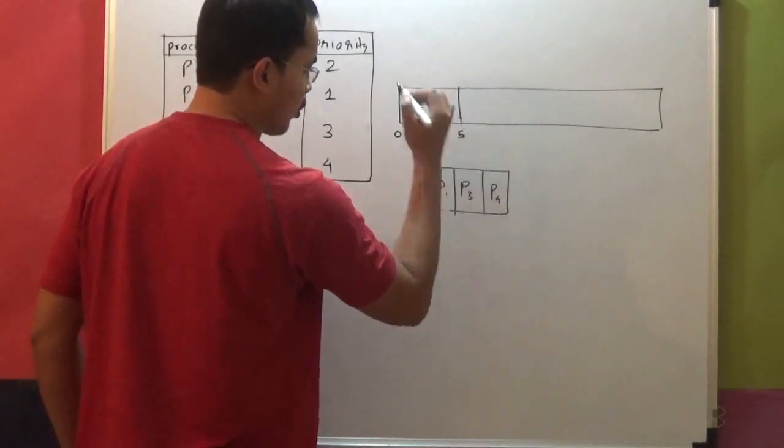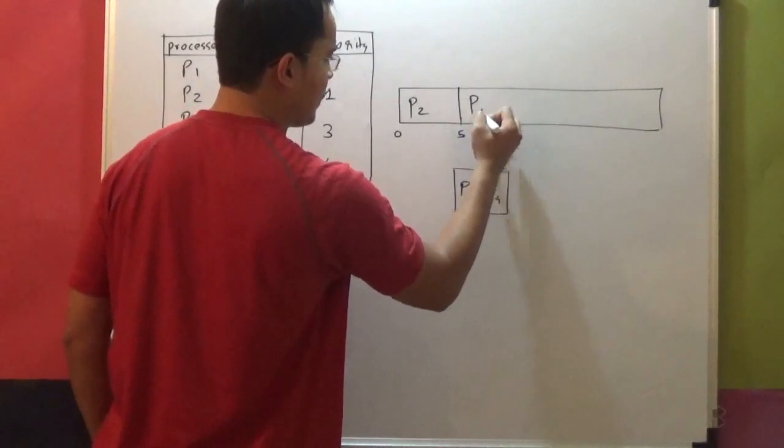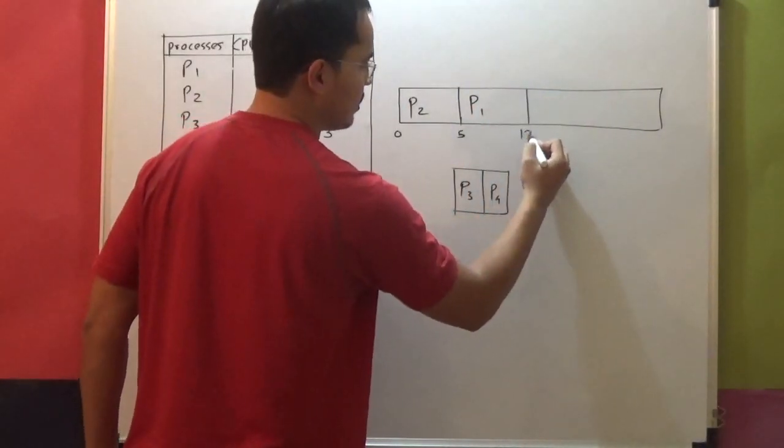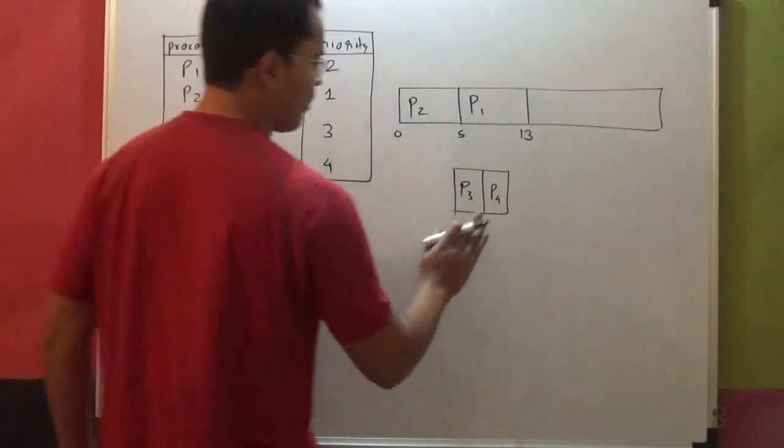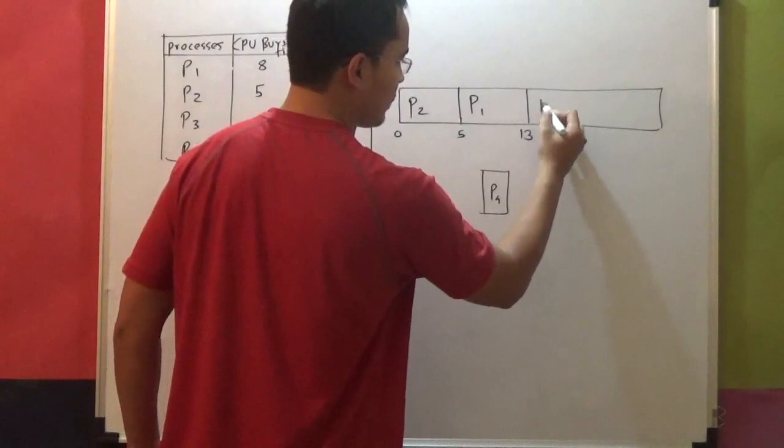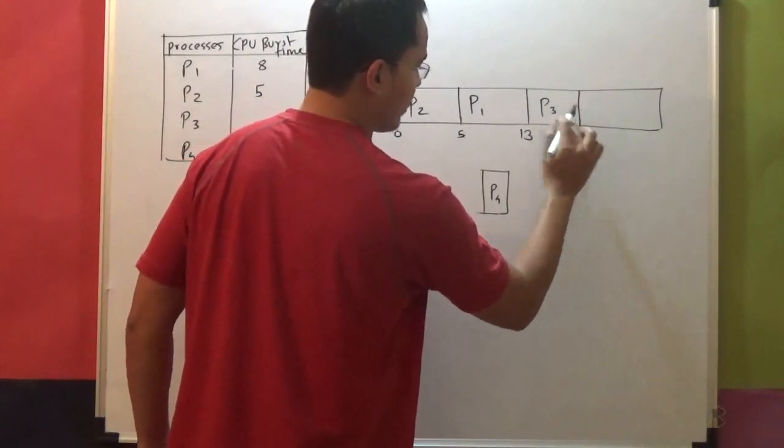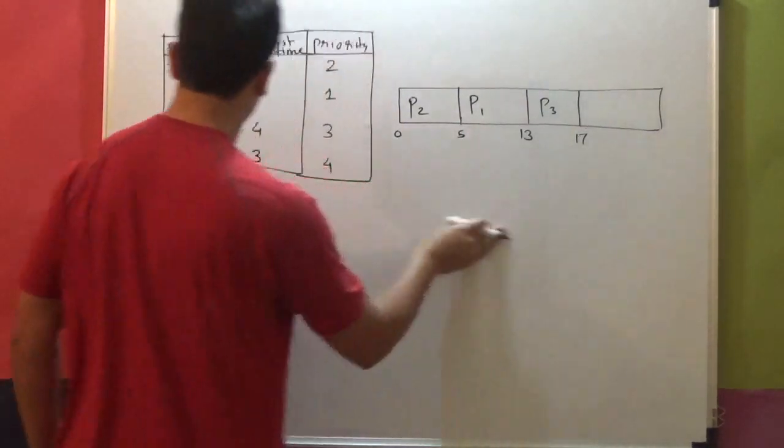Then P1, how much is the requirement of P1? 8. So from 5 to 13, we have P1. After that P3, how much is the requirement of P3? 4. From 13 to 17, occupied by P3.